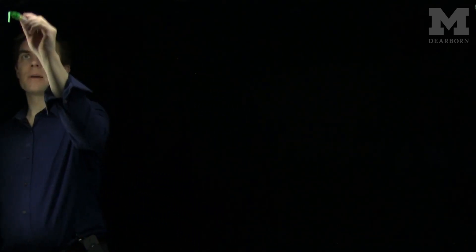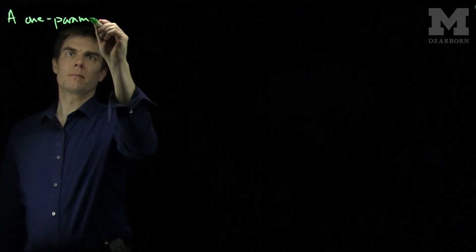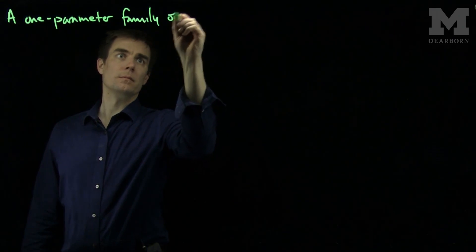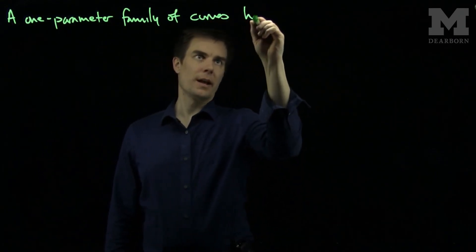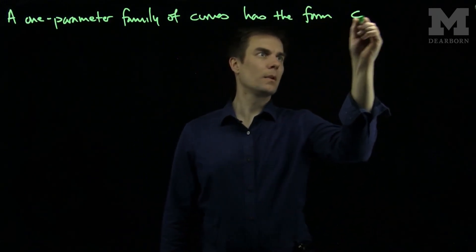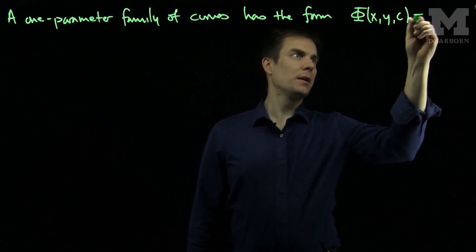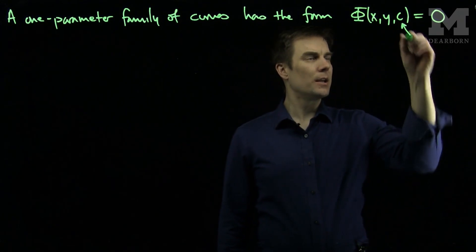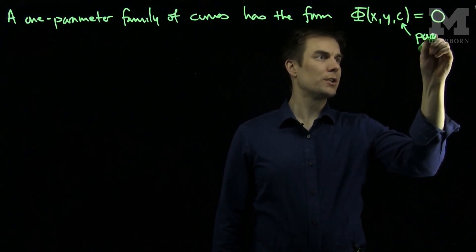A one-parameter family of curves has the form φ(x, y, c) = 0, where this value c is our parameter.